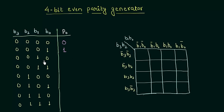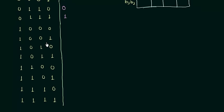In the third case again there is a single one, so we add 1 as the parity bit. In the fourth case there are 2 ones — an even number — so the parity bit is 0. Similarly: odd 1s → parity bit is high; even 1s → parity bit is low. We continue filling in the remaining combinations: 1, 0, 0, 1, 0, 1, 1, 0.